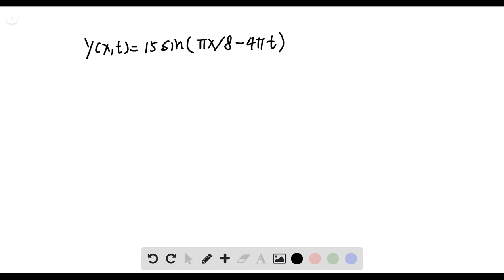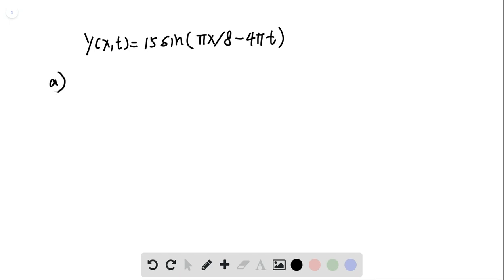So in this question, we are given this equation, and we want to find various properties of this wave. So in part A, we want to understand what is the transverse speed for a point at a certain distance and at a certain time.